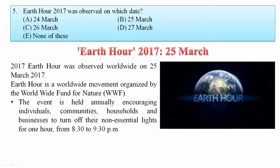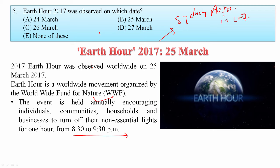Earth Hour 2017 was observed on which date? Earth Hour 2017 was observed worldwide on 25th March 2017. This movement is organized by the WWF — World Wide Fund for Nature. It encourages individuals, communities, households, and businesses to turn off non-essential lights for one hour, from 8:30 to 9:30 PM. This event was initially started in Sydney, Australia in 2007. So your answer is B.